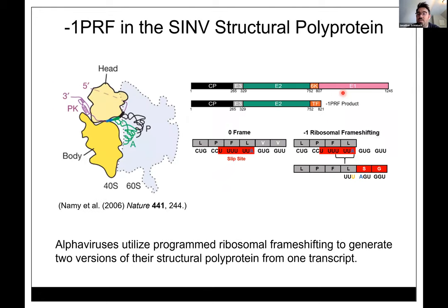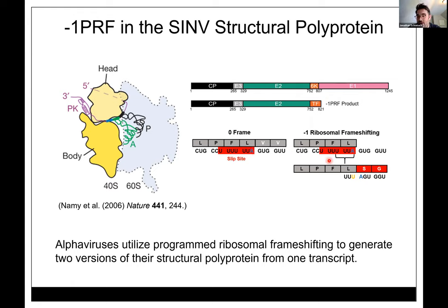If TM2 flips into the membrane, it inverts the orientation of TM3 and allows those cysteines access to the cytosol. Let's talk about what causes these two forms. About 85% of the time the ribosome makes the whole polyprotein: capsid, E3, E2, 6K, E1. But about 15% of the time, during translation of the 6K protein, the ribosome shifts out of frame and produces the 'transframe' protein from the minus-one reading frame.